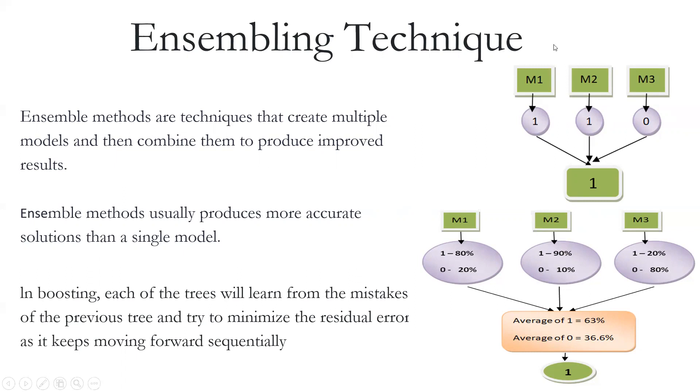Sometimes we also use probability-based approaches, like one model gives 60% probability, and then we assemble and get the average of these, and the final output is given here as one.